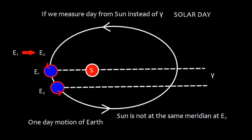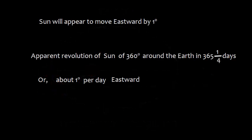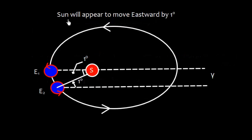But the Sun is different and we can easily say that this is about one degree. Earth has to rotate further by about one degree to align with the Sun. Why is it so? We can easily say that the Sun will appear to move eastward by one degree, and apparent revolution of Sun of 360 degrees around the earth in 365 and one-quarter days will give a rate of one degree per day eastward. Look at this: here earth has to rotate further in this direction by one degree, so Sun will appear to be moving eastward in this direction by one degree.